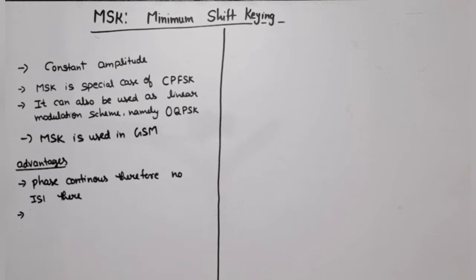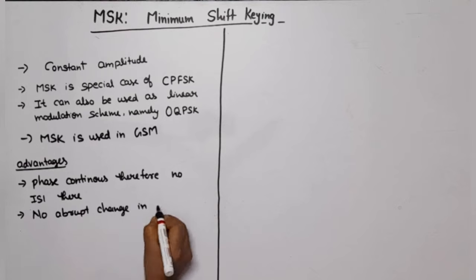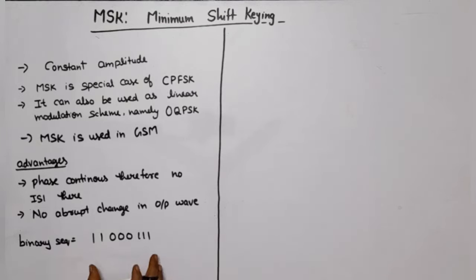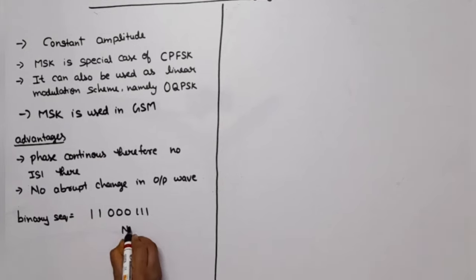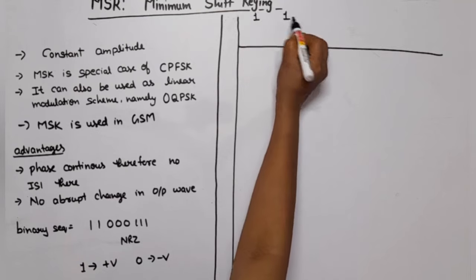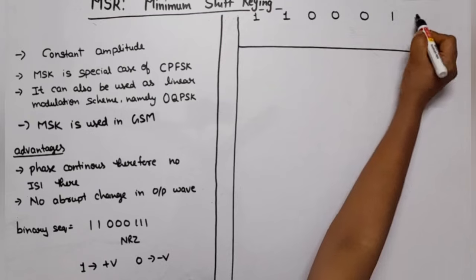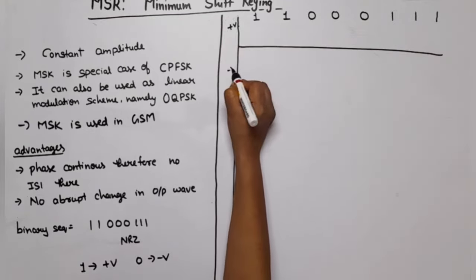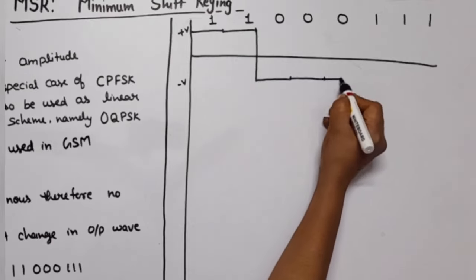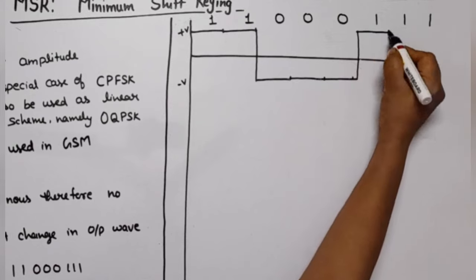Because the phase is continuous, we multiply the bits with a smooth carrier. The second advantage is no abrupt change in the output wave. Now let's look at the waveform. We take the sequence 1, 1, 0, 0, 0, 1, 1, 1. First we represent it in the form of pulses using line coding with NRZ: 1 is shown as plus V and 0 as minus V. So for this sequence: plus V, plus V, minus V, minus V, minus V, plus V, plus V, plus V.